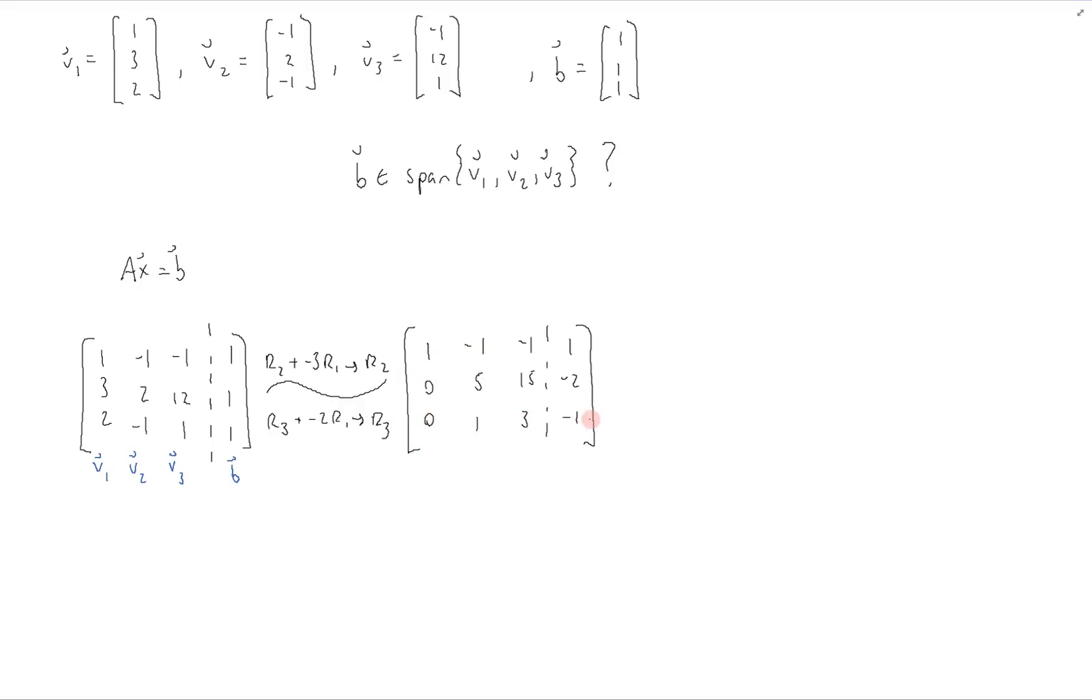And from here, we're going to get rid of this 1 below the 5, to get this into echelon form, by taking row 3 plus negative 5 times row 2, to get this.